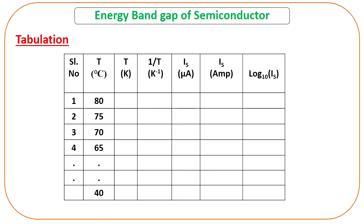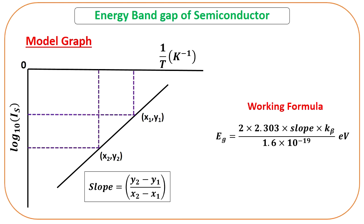Then calculate the log base 10 of the current in ampere — this goes in the final column of the table. Now draw a graph of log₁₀(I) versus 1/T. On the x-axis is 1/T in inverse Kelvin, and on the y-axis is log₁₀(I). Connecting the data points will give a straight line.